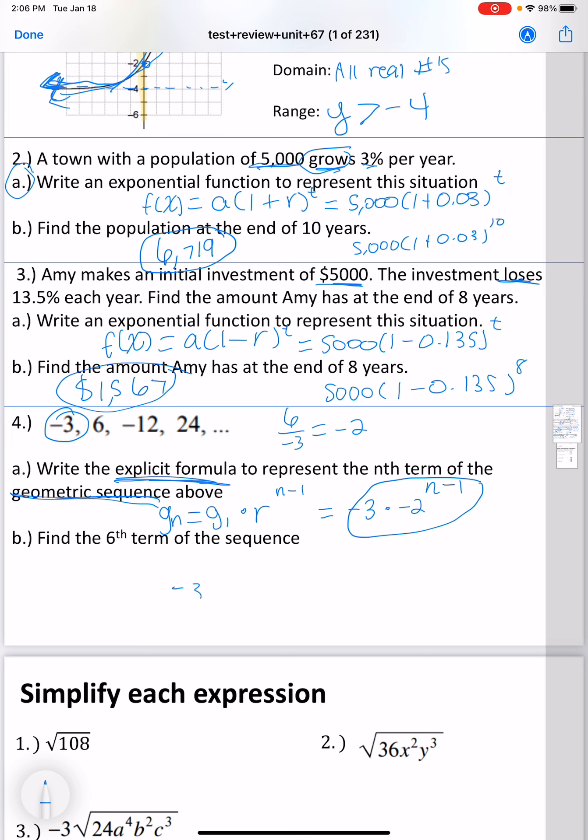For part B, we would plug that number in. Plug in 6 wherever we see an n. And then in your calculator, the way you do this is you would first simplify 6 minus 1 to make it 5. Then you would do negative 2 raised to the 5th power, and then multiply that by negative 3. And if you do that correctly, you should have gotten 96 as our 6th term.